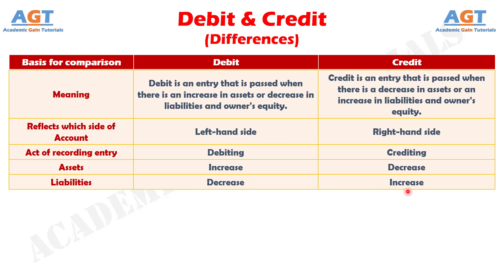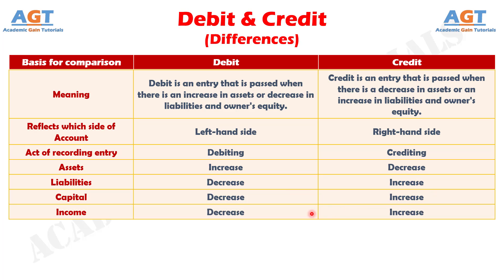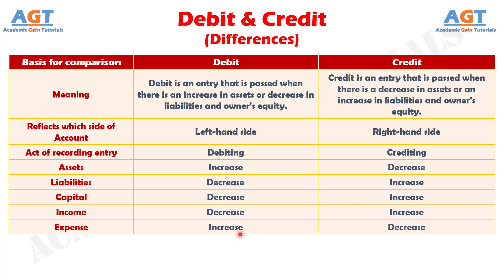Number 6: capital shows a decrease by the amount debited. Number 7: income shows a decrease by the amount debited. Number 8: expenses show an increase by the amount debited, whereas expenses show a decrease by the amount credited.